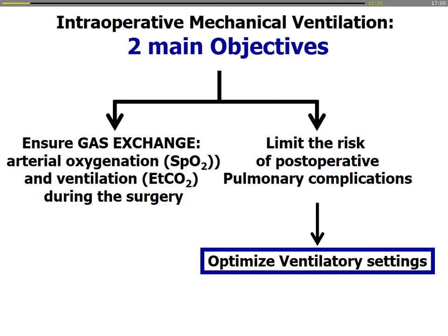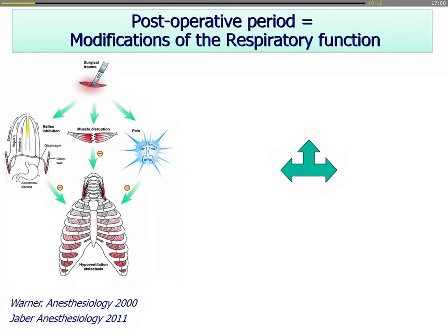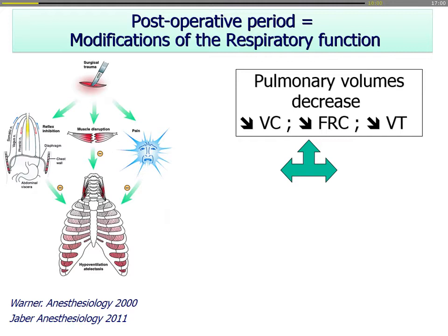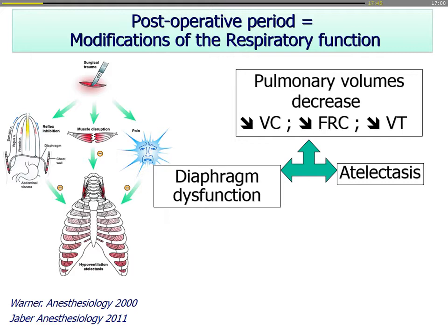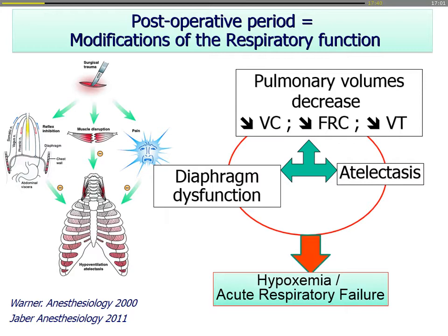This is very new, because usually we think the surgeon is the most important person in surgery, but now we can say the anesthesiologist is also probably important. The respiratory function is modified by surgery and general anesthesia. The main factors are decreasing pulmonary volumes — all volumes decrease — including FRC, tidal volume, leading to diaphragm dysfunction and atelectasis, which develop a vicious circle leading to postoperative pulmonary complications, mainly hypoxemia and acute respiratory failure.